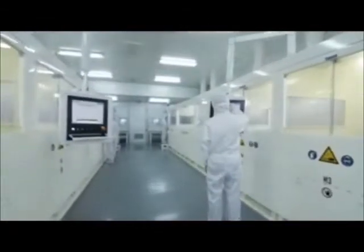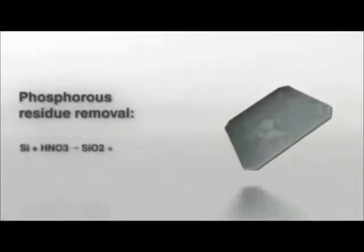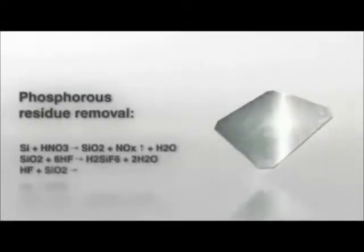In order to remove unwanted phosphosilicate glass and phosphorus diffusion, the wafers go through a step called PSG etching and isolation.